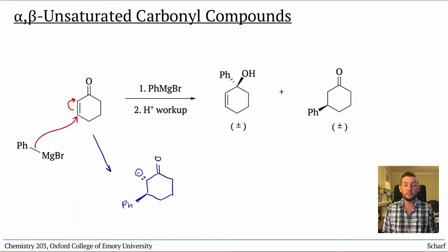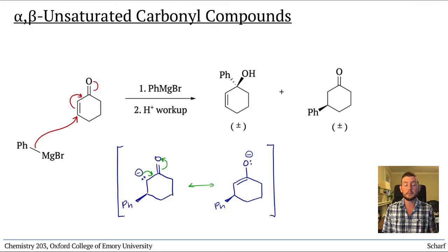And because the lone pair is adjacent to this carbonyl, we can draw a better resonance structure of this intermediate. In mechanisms, it's always most efficient to go directly to the best resonance structure. So we would normally draw this step like this.